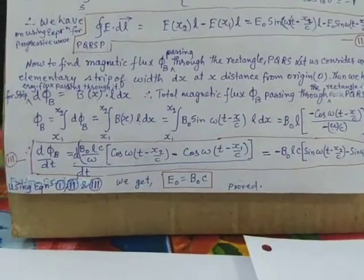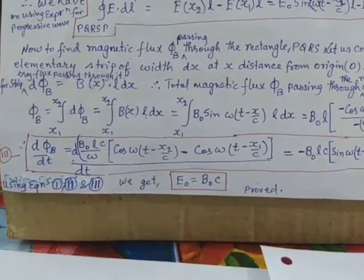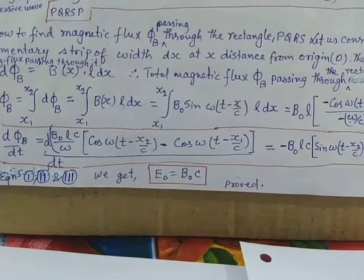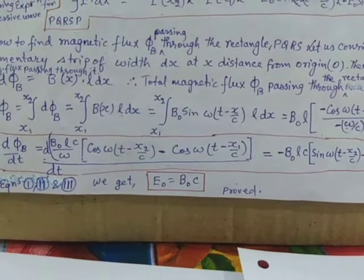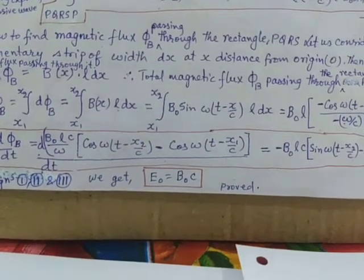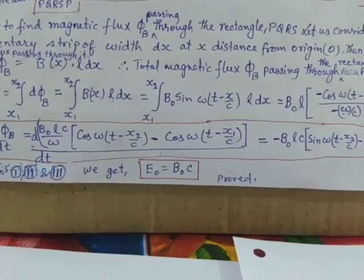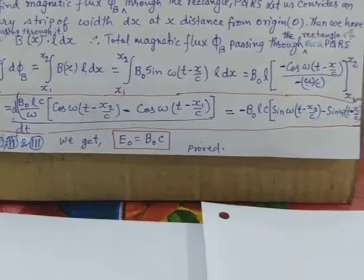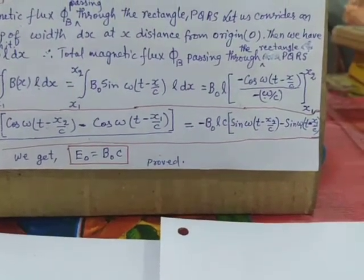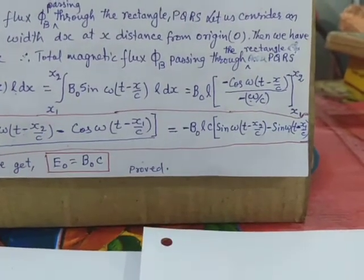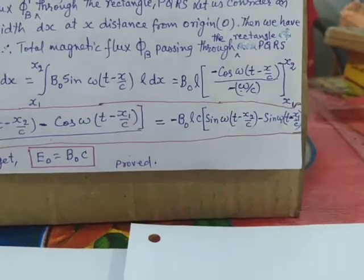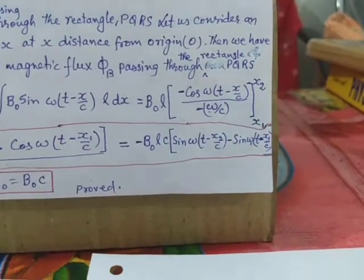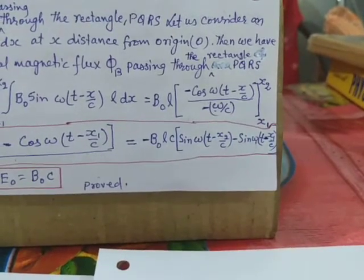The total flux associated with loop PQRS equals the integral within limits x1 to x2 of B_x times L dx. Since the electromagnetic wave is a progressive wave, we express it as B₀ sin(ωt minus x by c). On integrating, we get B₀L times minus cos(ωt minus x by c) divided by minus omega by c.